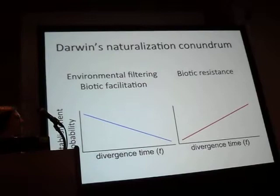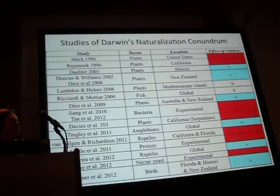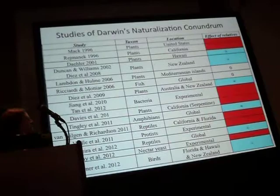Looking at the summary of quite a few studies, the important thing to focus on is the last column on the right. You can see that there are different effects of relatives: negative effects of relatives shown in red, but also some studies have found positive effects of relatives on establishment shown in blue, and a couple of studies have found no consistent pattern.